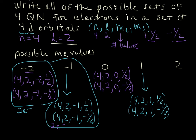And then finally, this last guy, m sub l equals 2, so we have 4, 2, 2, one half, and 4, 2, 2, negative one half.